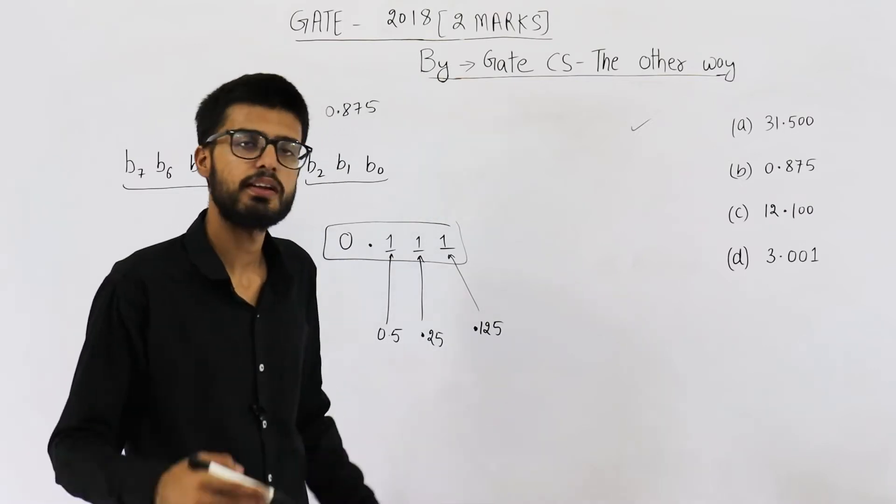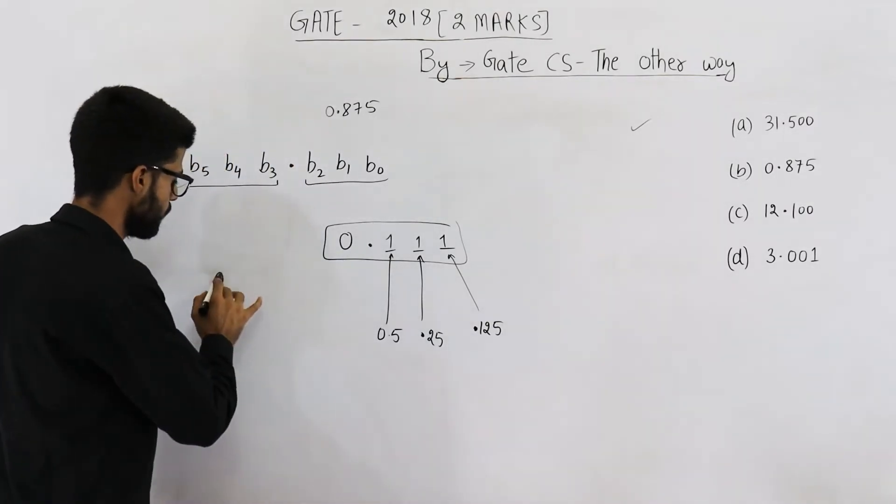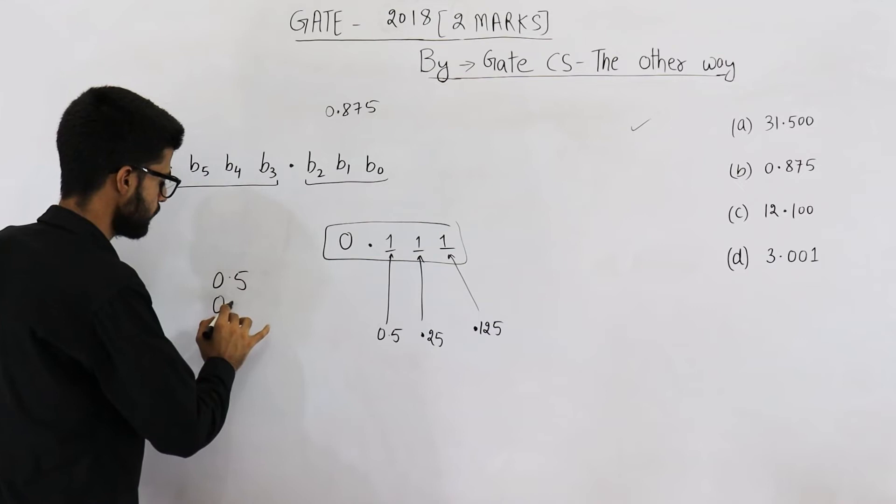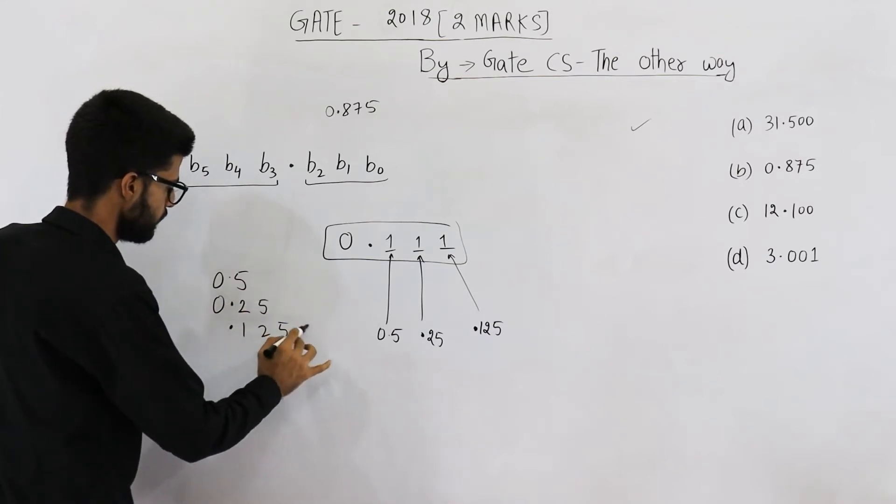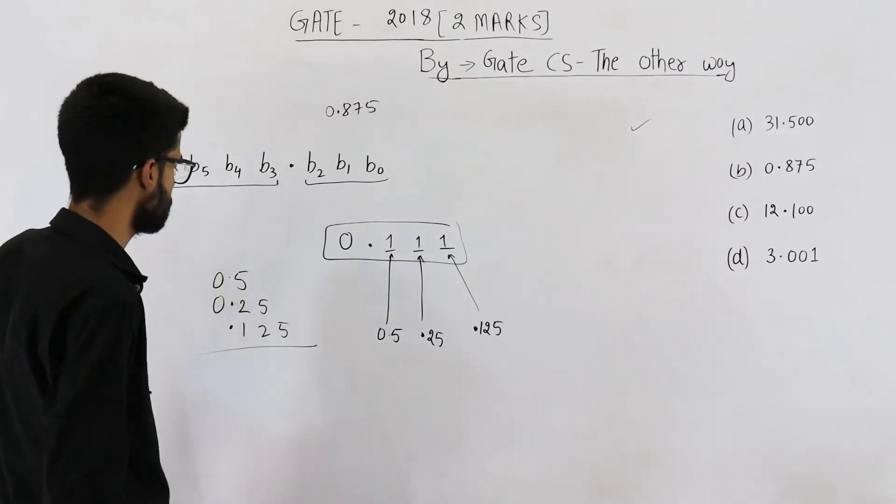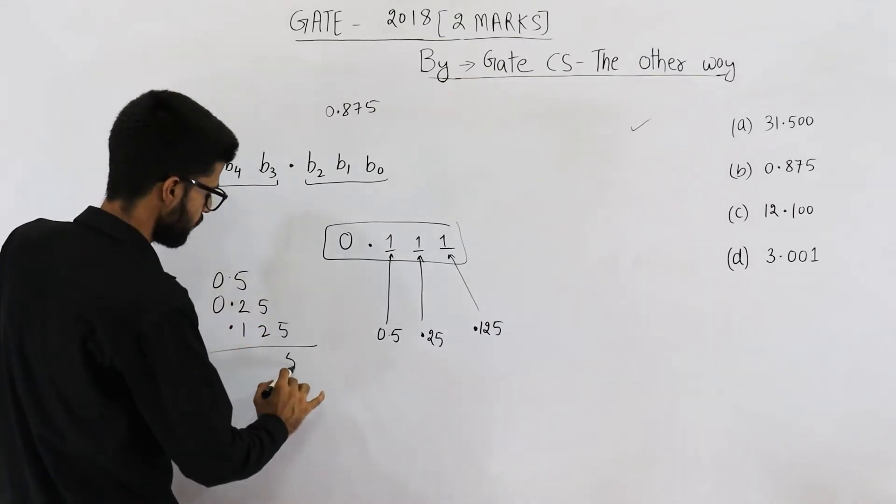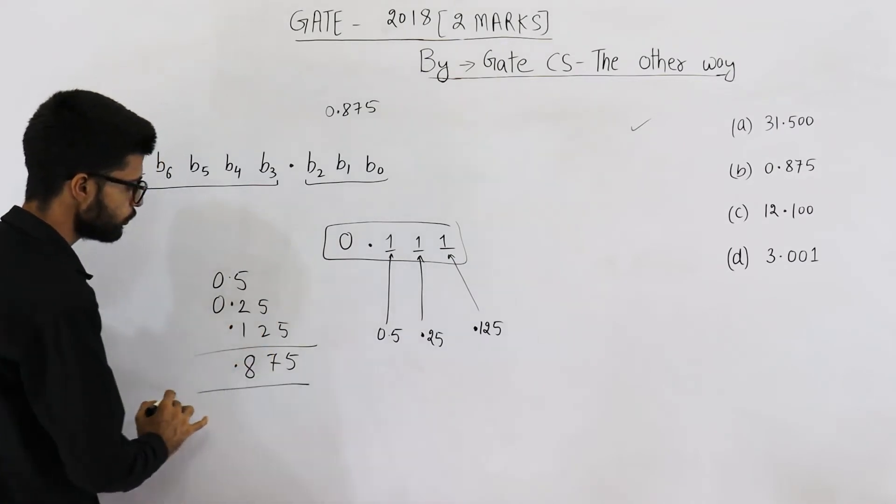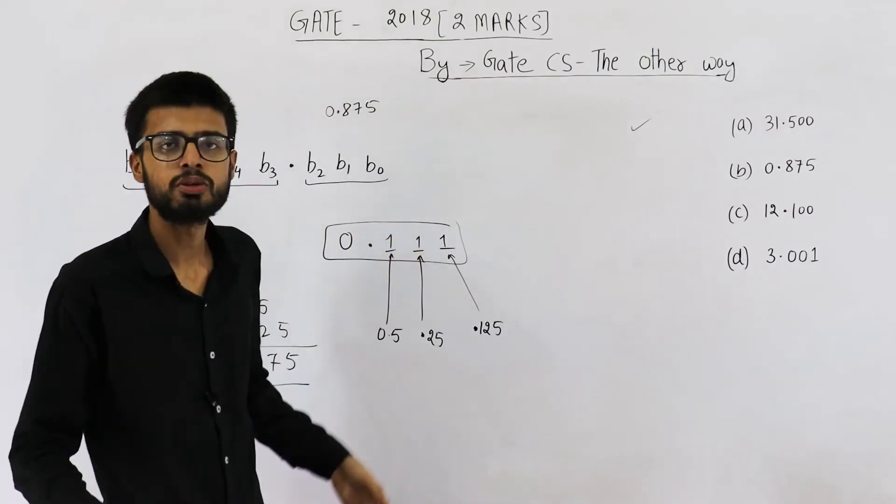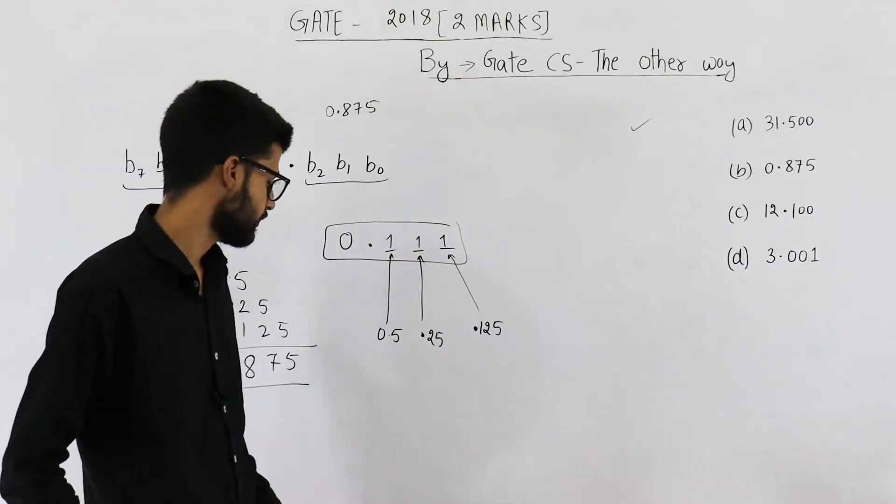So all of these three bits are on. That means all of these values will be added: 0.5 plus 0.25 plus 0.125. So add these numbers. You are going to get 5, 7 and 8. So the answer is 0.875. That means this number actually represents 0.875.